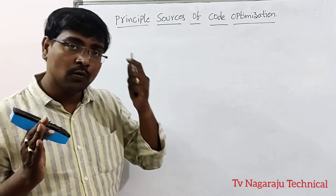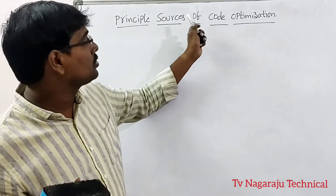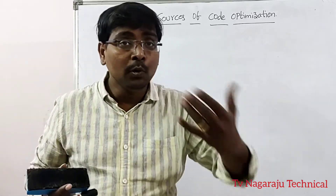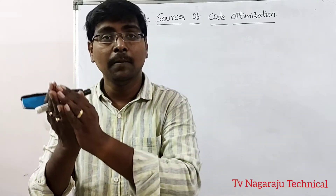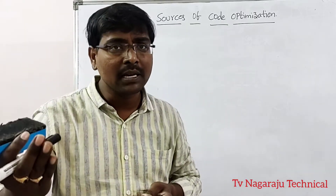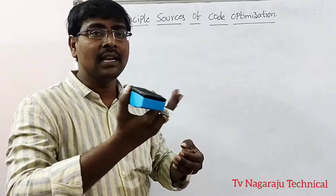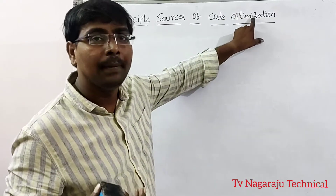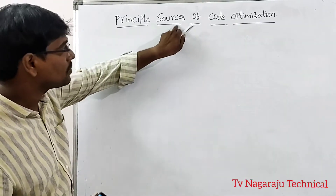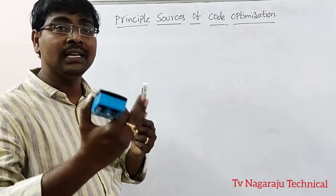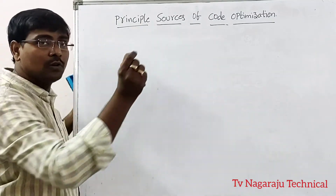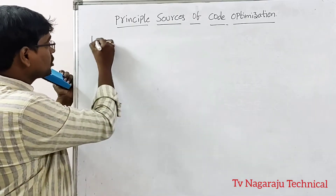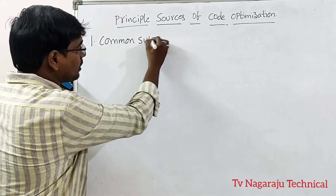Welcome to our channel. In this session we are going to discuss principal sources of code optimization. Code optimization is simply to improve the code such that the output of the program could run fast and save space. Simply removing some unnecessary lines of code improves the performance of the program — that is called code optimization. The different ways used for optimizing the code are called principal sources.